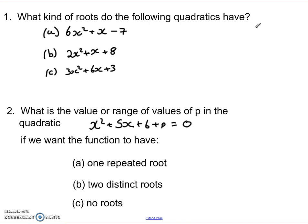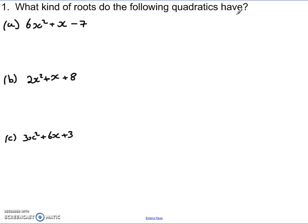Here's a reminder of those questions for you. First off, what kind of roots do the following quadratics have? So I've got 6x squared plus x minus 7, that's a. b is 2x squared plus x plus 8, and c is 3x squared plus 6x plus 3. Remember, to look at that, we need the discriminant. So we need b squared minus 4ac, and there are the three different scenarios for that. Let's have a look at how each of these works out.